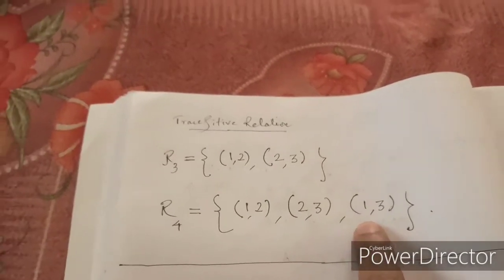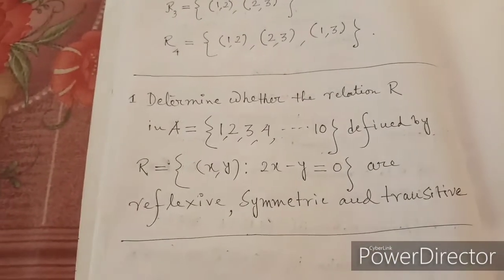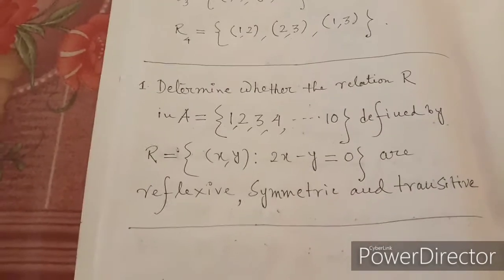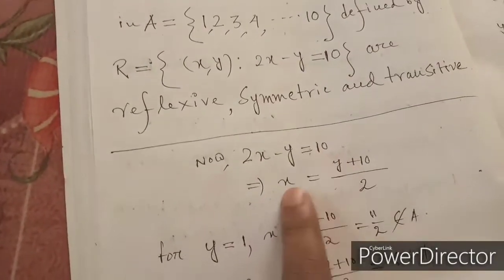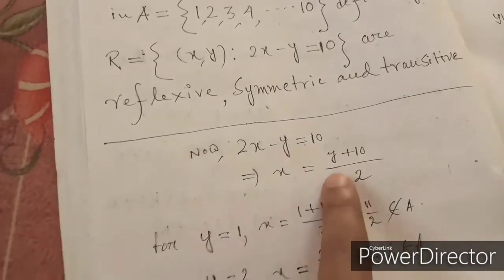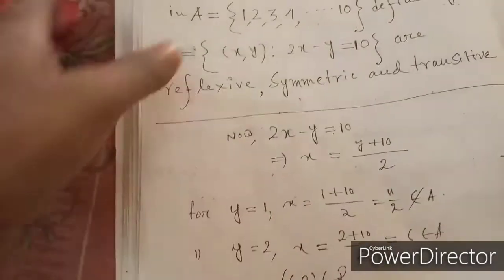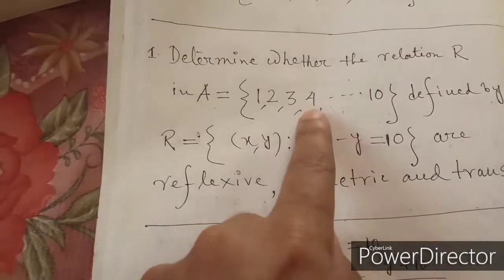Now we have to solve some problems related to reflexive, symmetric, and transitive relations — that is, equivalence relations. We take the relation defined by 2x − y = 10, so x = (y + 10) / 2. The set A is given as {1, 2, 3, 4, ..., 10}.